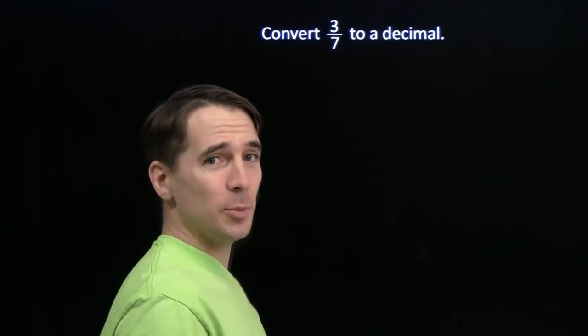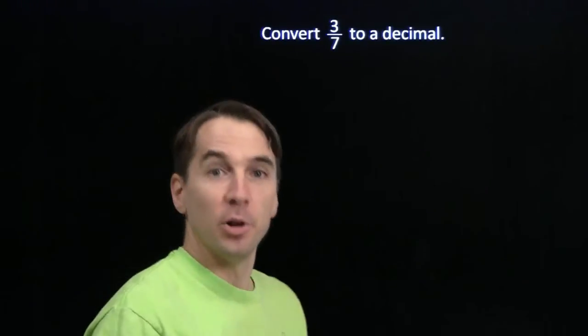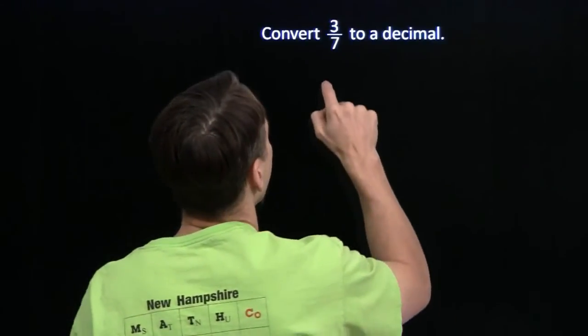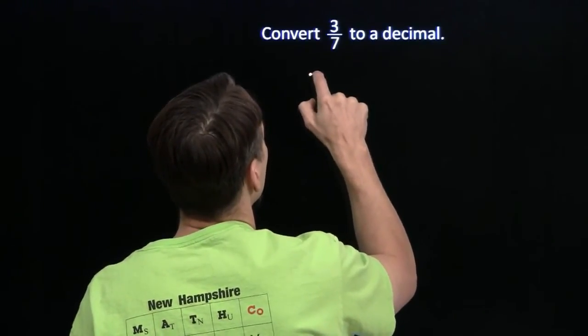Turn another fraction into a decimal? Well, at least the denominator is small, so this should be easy. We know how to handle this. We just divide the 7 into the 3.